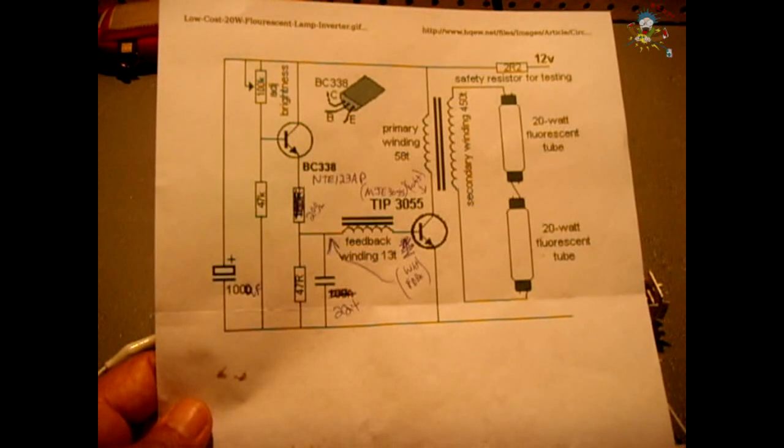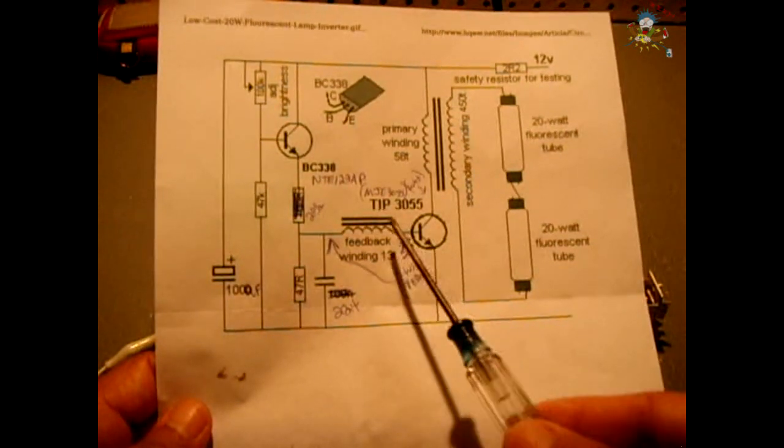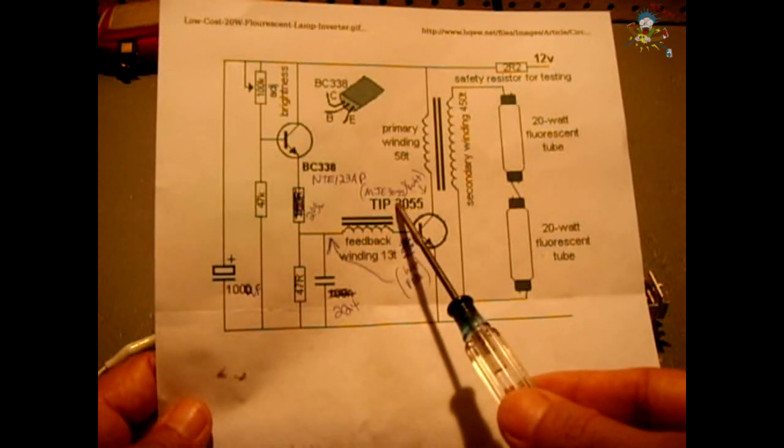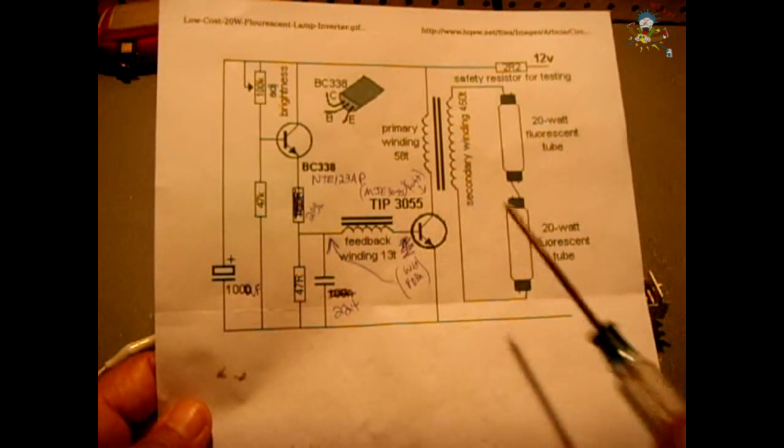Now here's the schematic. It consists of two transistors. You have your TIP-3055. I used an MJE-3055. That's an NPN.